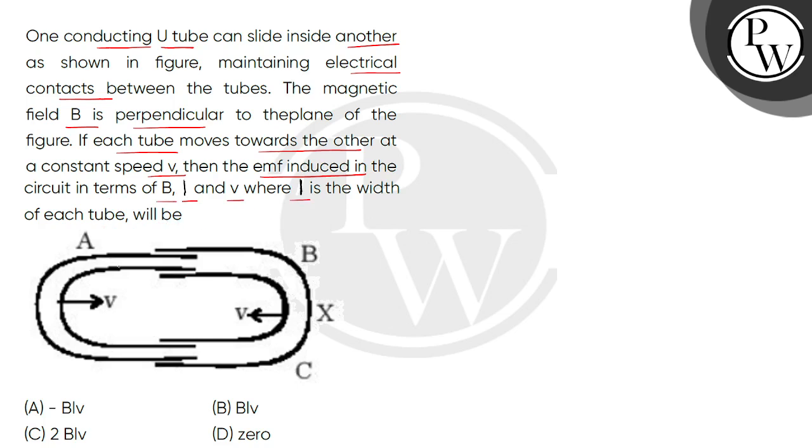So children, we have seen two U-tubes in the diagram. First is A, second is B. The A tube can slide inside B such that both of them will have electrical contacts. The magnetic field is perpendicular to this plane.